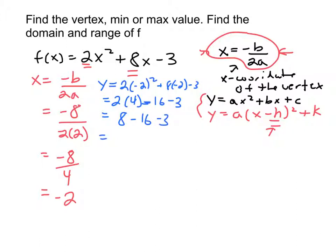Which is, 8 minus 16 is negative 8 minus 3, which is negative 11. Okay, so what's my vertex? My vertex is (-2, -11). So that's the vertex.